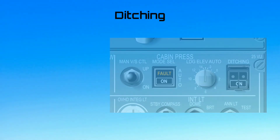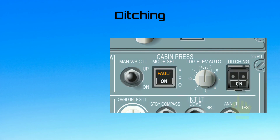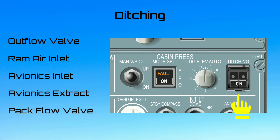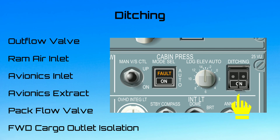To prepare the aircraft for ditching, the flight crew must press the ditching pushbutton on the cabin press control panel to close all valves below the flotation line. These are: the outflow valve, the emergency ram air inlet, the avionics ventilation inlet and extract valves, the pack flow control valves, and the forward cargo outlet isolation valve.